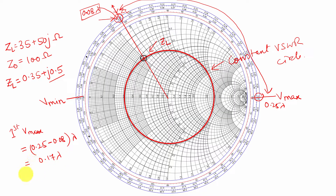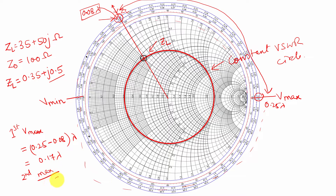Similarly, we can find the second voltage maxima. For the second voltage maxima, we keep on rotating along this path and again meet the voltage maxima point. One complete circle on the Smith chart equals 0.5 lambda. So to calculate the second maxima, we just add 0.5 lambda. The second voltage maxima will be 0.17 plus 0.5 lambda, which equals 0.67 lambda. Keep adding 0.5 lambda to get the third maxima and so on.